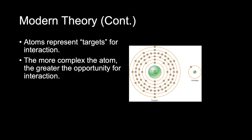Think of atoms as targets, with the nucleus as the bullseye and the electron shells as the rings. Whether discussing atomic interactions in the x-ray tube or interactions between human tissue atoms and x-ray photons, atoms represent the targets for interaction. There is a greater opportunity for interactions with very large, complex atoms because their nucleus is larger and there are more electron shells and electrons in orbit. Less complex atoms are physically smaller, with fewer shells and electrons, offering less opportunity for interaction.